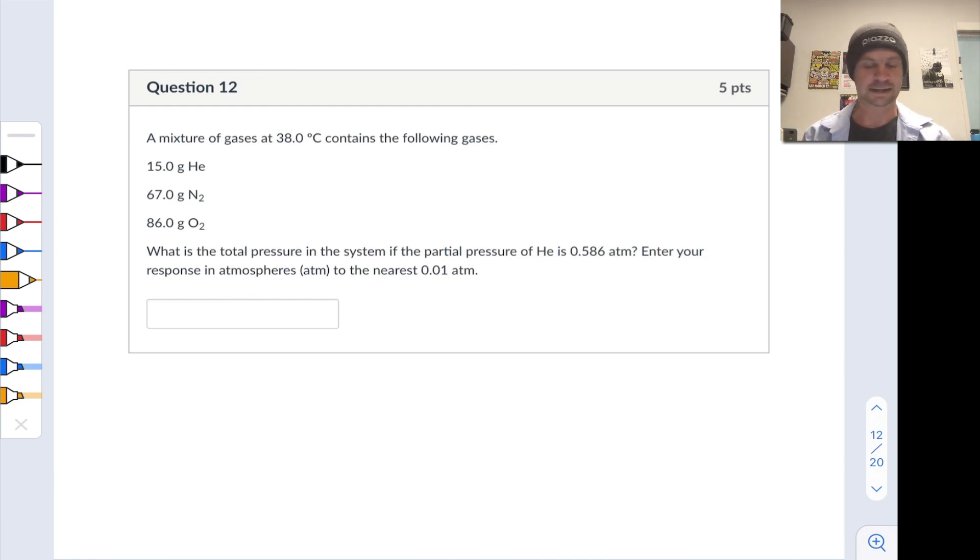We have a mixture of gases at 38 degrees C, and that temperature may be relevant, so let's convert to Kelvin: 273 plus 38 is 311 Kelvin. We've got three gases: 15 grams of helium, 67 grams of nitrogen, and 86 grams of oxygen.